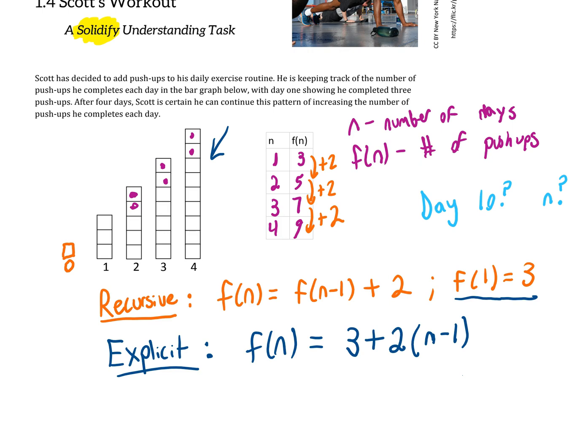You can expand this out if you want using the distributive property. We'd have 3 + 2n - 2. Three minus two is one, so we'd have 1 + 2n. So those are equivalent representations in the explicit form.